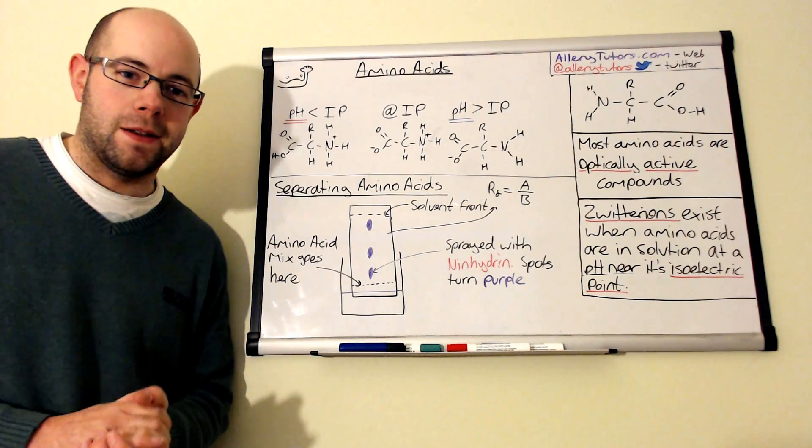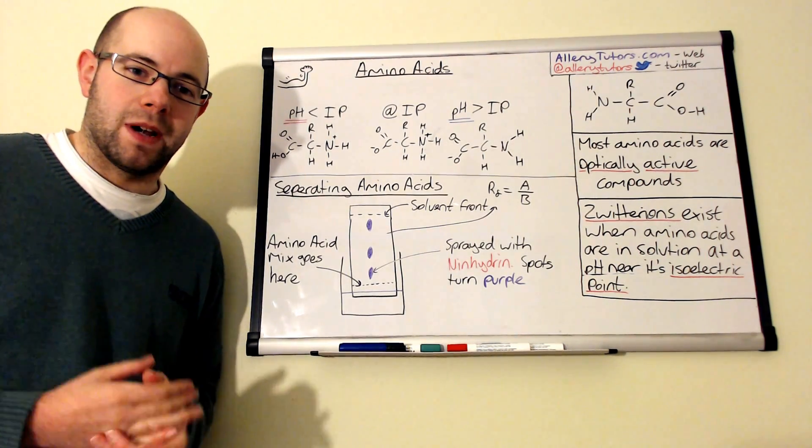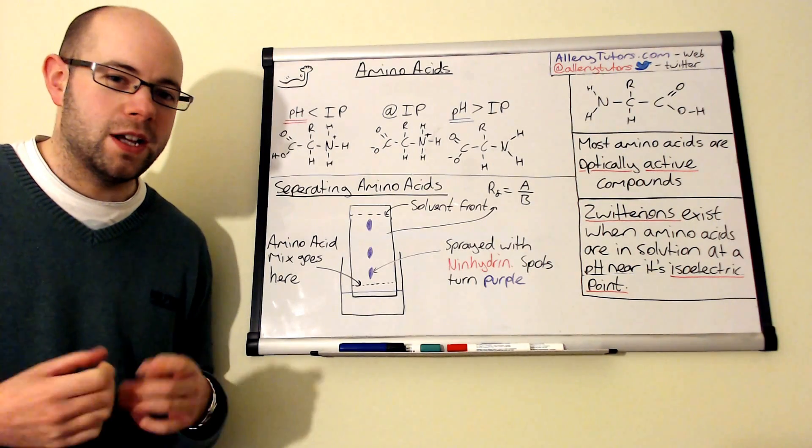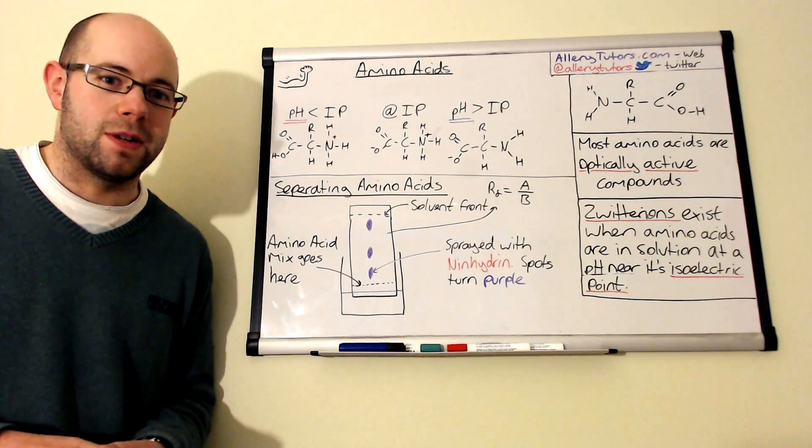But we're just going to look at basically what an amino acid might look like. We're also going to look at something called the isoelectric point as well and how we can detect and separate amino acids.